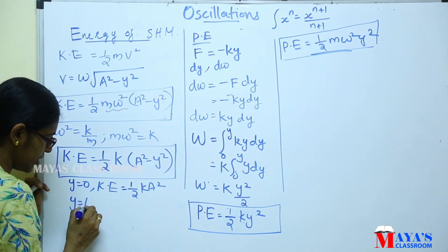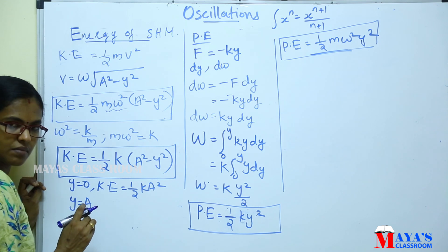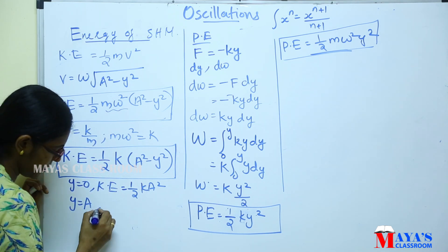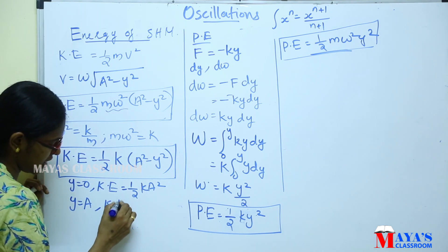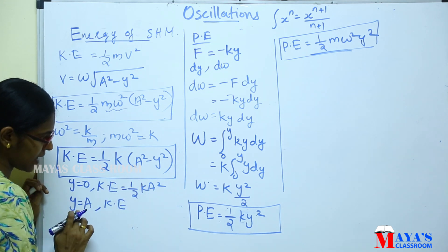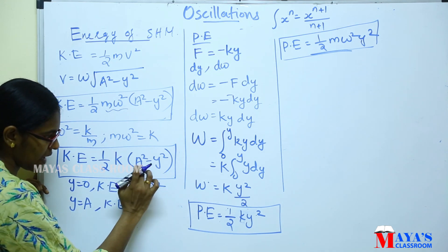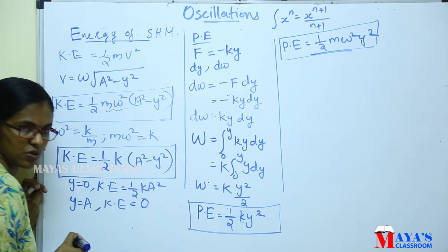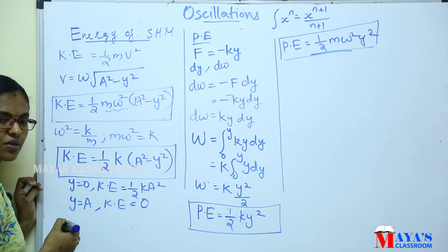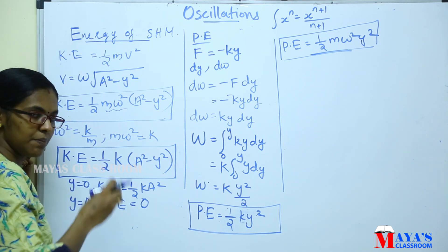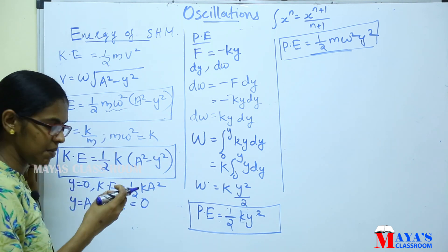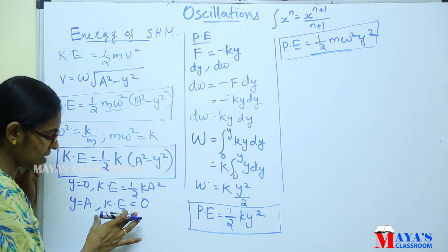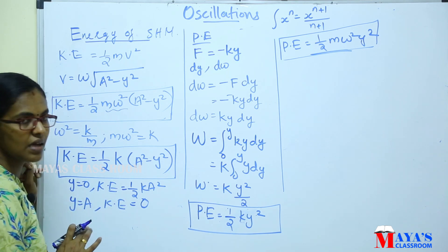When y is equal to a, that is the extreme position. At the extreme position, the kinetic energy is equal to zero. So at mean position the kinetic energy is maximum, and at the extreme position the kinetic energy is minimum.